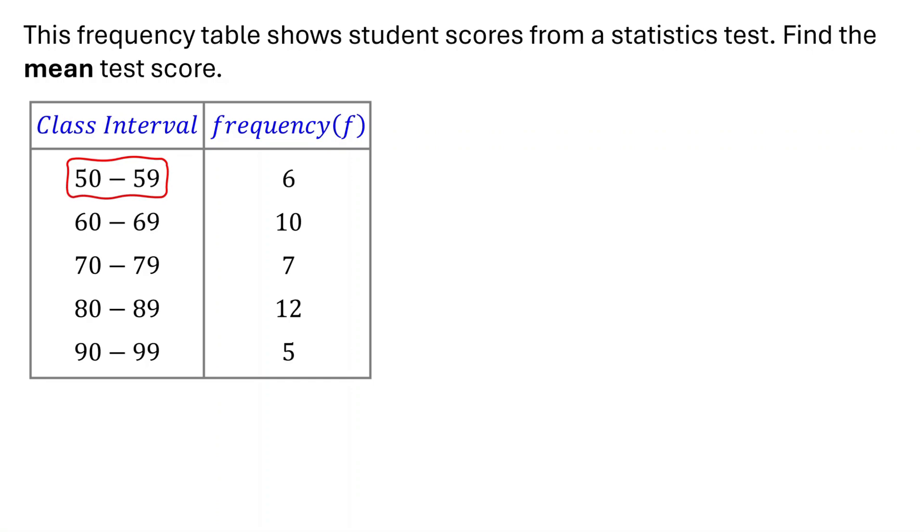For example, the first class represents students who scored between 50 and 59. The second column lists the frequency, which tells us how many students scored in each interval. For instance, in the 50 to 59 interval, the frequency is 6. This means 6 students scored between 50 and 59.